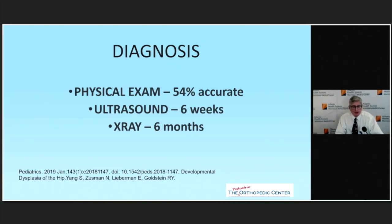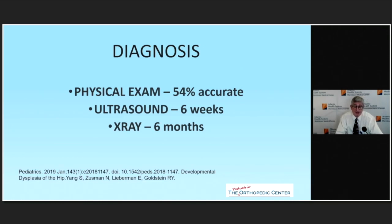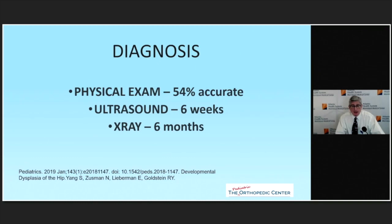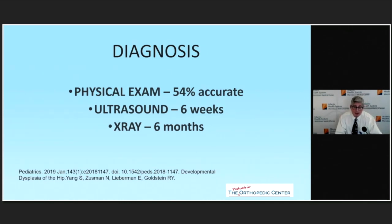For diagnosis, the Ortolani and Barlow maneuvers are only about 45% accurate across all providers, meaning if a child actually has hip dysplasia, it's only picked up on physical exam about 45% of the time. There is also silent hip dysplasia, which is why we screen certain hips even when you don't feel anything on clinical exam. Ultrasound is recommended at six weeks, because by then the relaxing hormones and estrogen from the placenta are no longer in the child's system.